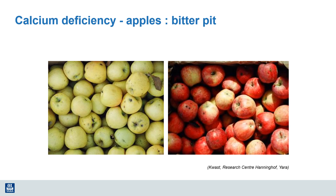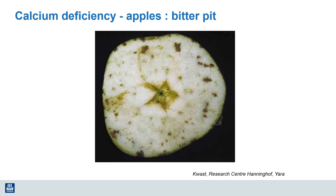In apples, calcium deficiency often results in a syndrome called bitter pit, where the apples fail to form good cell walls and membranes, leading to dark spots internally and externally on the surface. You can see in this cross-section of an apple where this failure to develop good cell walls and membranes leads to black spots. This is not only unappealing to eat — the apple does not hold up well in storage, as the membranes and cell walls continue to break down and the apple becomes totally rotten.